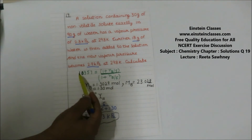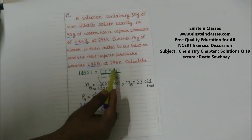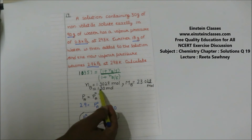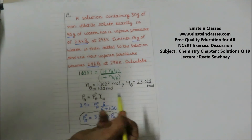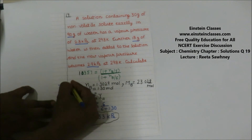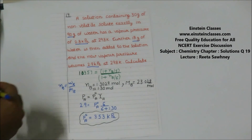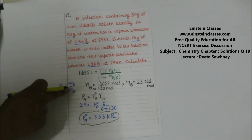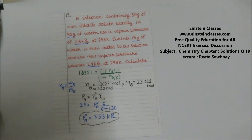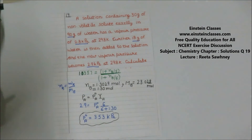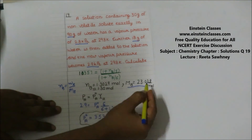Dividing the two equations, we get 1.035 = (1 + NB/5) / (1 + NB/6). By simplifying, we get moles of solute NB ≈ 1.30 moles. The molar mass of the solute is then calculated using NB = WB / Mb. Since the mass of solute is 30 grams, we can find Mb. Always remember: 30 grams is not negligible compared to 90 grams, so never neglect the moles of solute in the denominator.